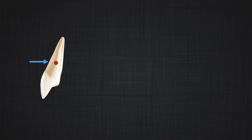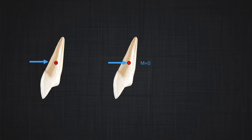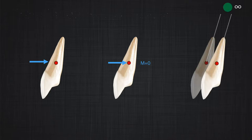What happens if I bring the force close to the center of resistance? You are already familiar with this example. There is no moment in the system, therefore there should not be any rotation. The magnitude of displacement should be equal to the previous examples. So you are expecting the same displacement, no rotation — that is called bodily movement. We can say the center of rotation of this movement is at infinity.